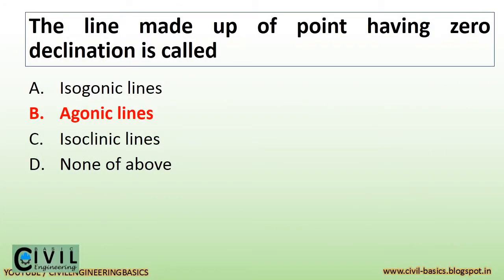The line made up of points having zero declination is called agonic lines.